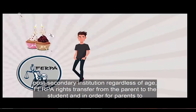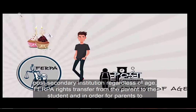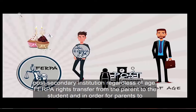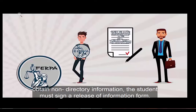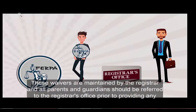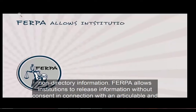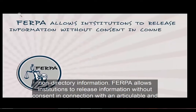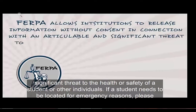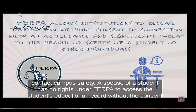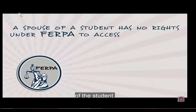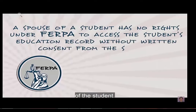When a student reaches the age of 18 or begins attending a post-secondary institution, regardless of age, FERPA rights transfer from the parent to the student. In order for parents to obtain non-directory information, the student must sign a release of information form. These waivers are maintained by the registrar, and all parents or guardians should be referred to the registrar's office prior to providing any non-directory information. FERPA allows institutions to release information without consent in connection with an articulable and significant threat to the health or safety of a student or other individuals. If a student needs to be located for emergency reasons, please contact Campus Safety. A spouse of a student has no rights under FERPA to access the student's education record without written consent from the student.